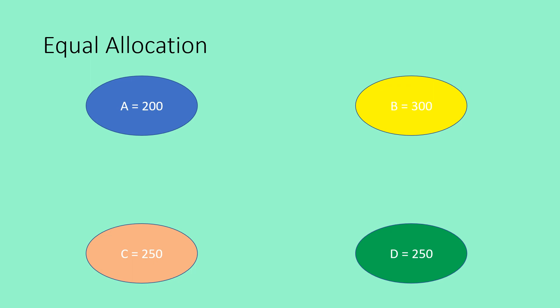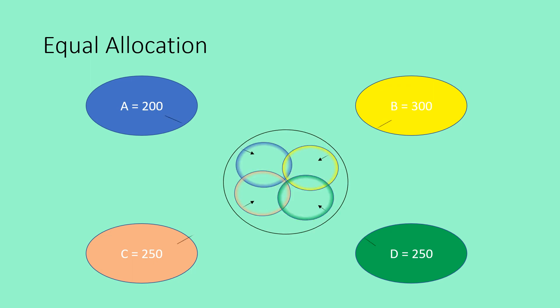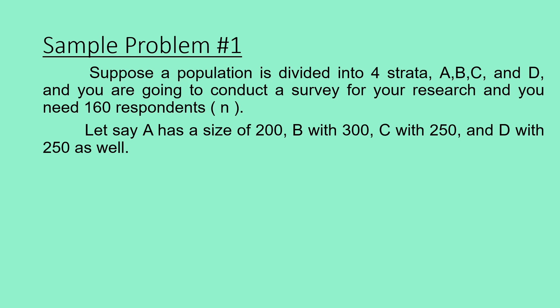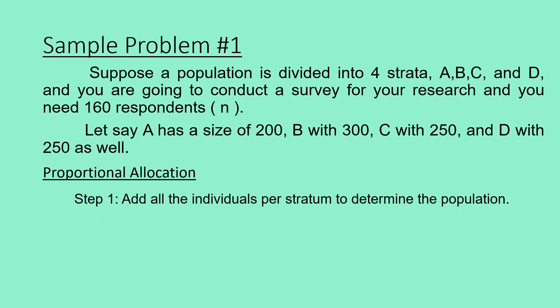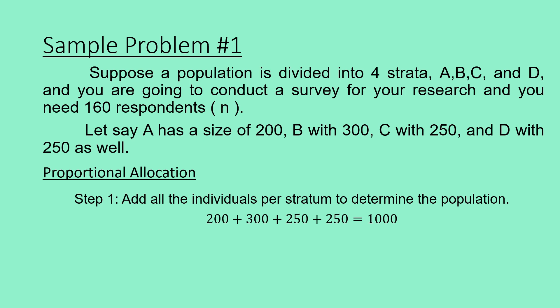This is how equal allocation for stratified sampling looks like — you have 4 strata with their given sizes, and each group will have 40 representatives to become part of the sample. Still in sample problem number 1, this time we will do the stratified sampling technique using proportional allocation. Step 1: Add all the individuals per stratum to determine the population. We add the individual sizes — 200 plus 300 plus 250 plus 250 — and we get a population size of 1,000 individuals.